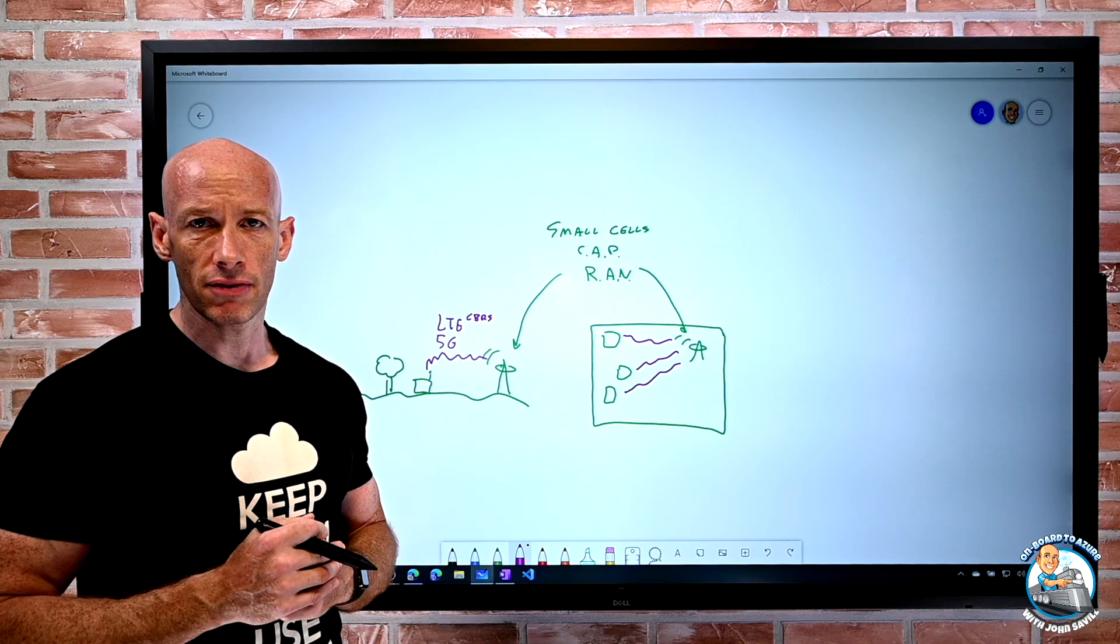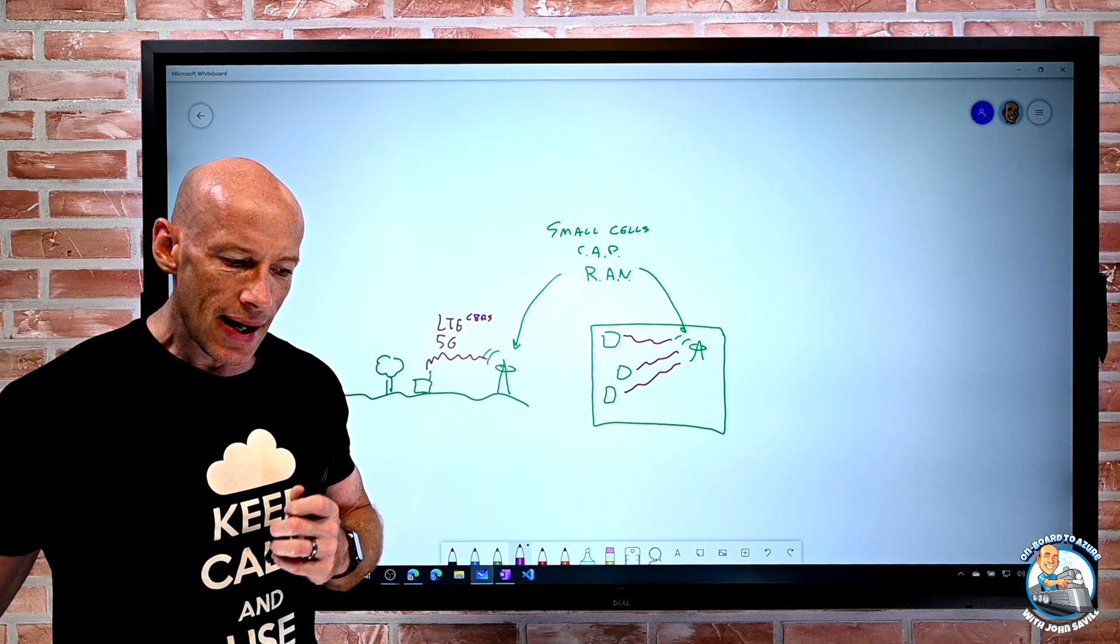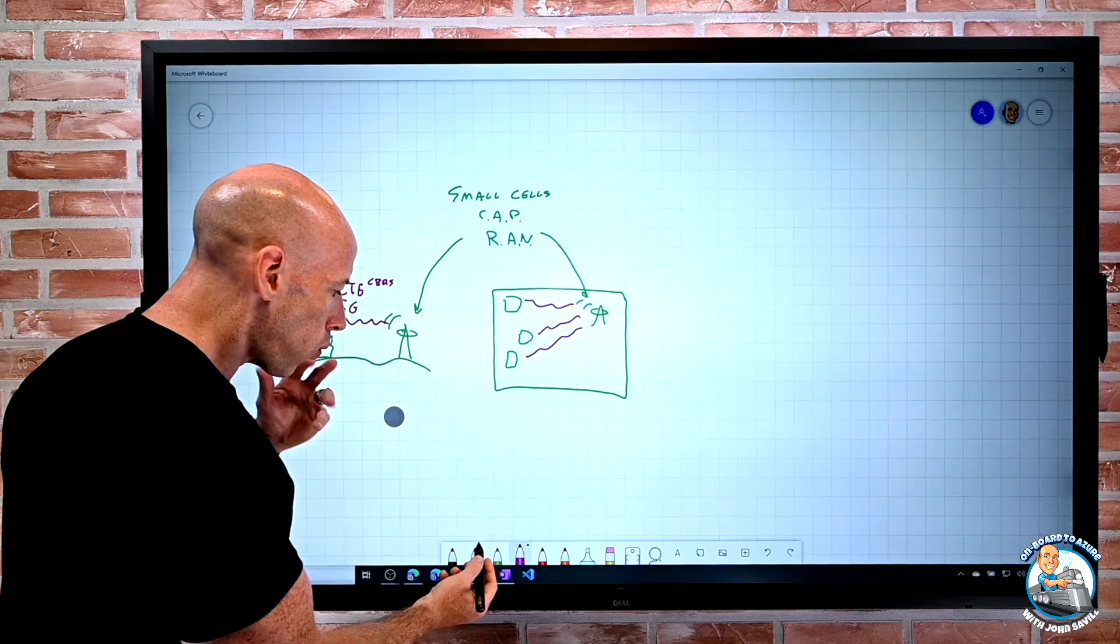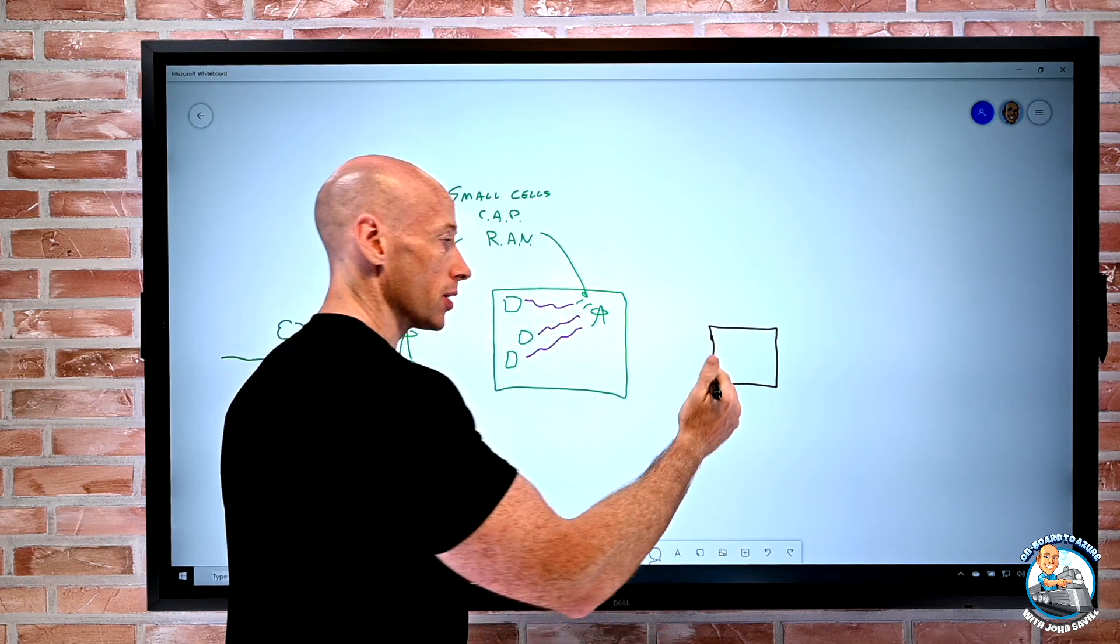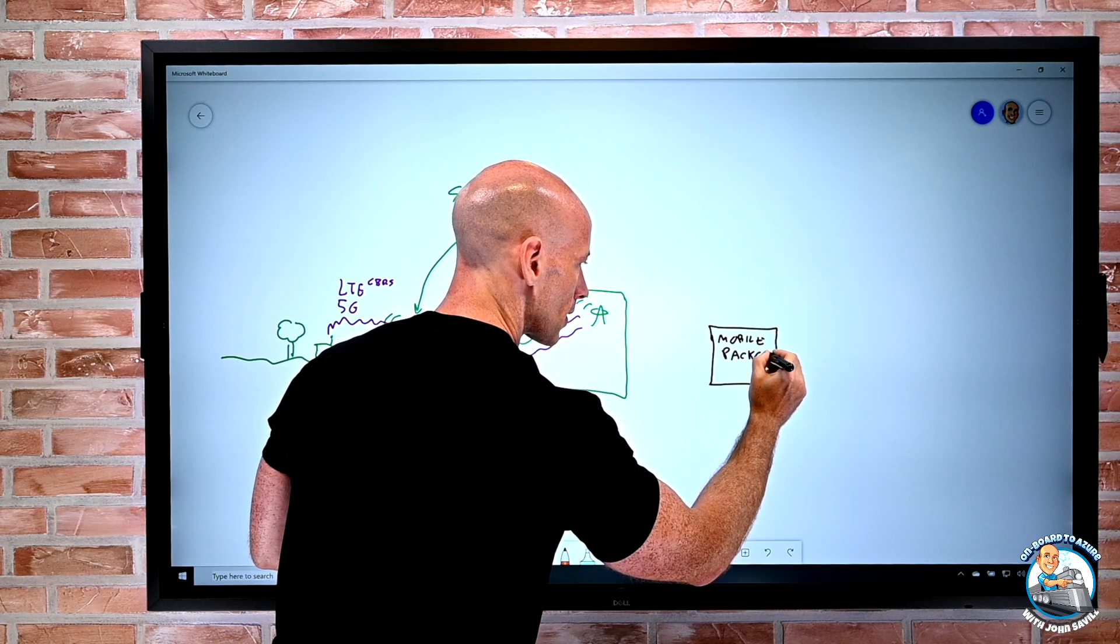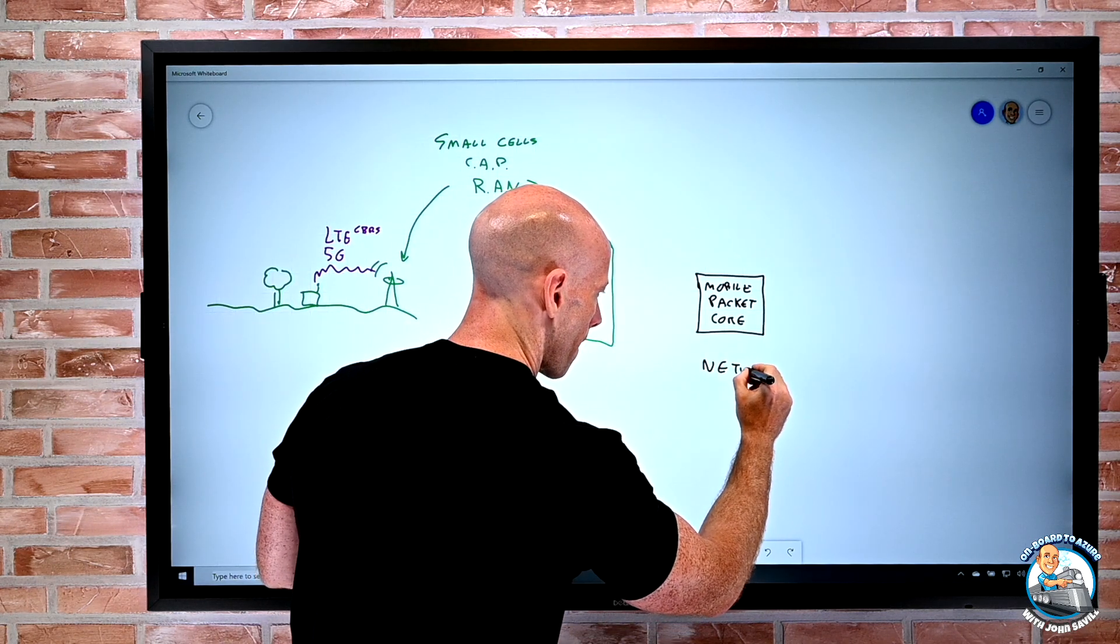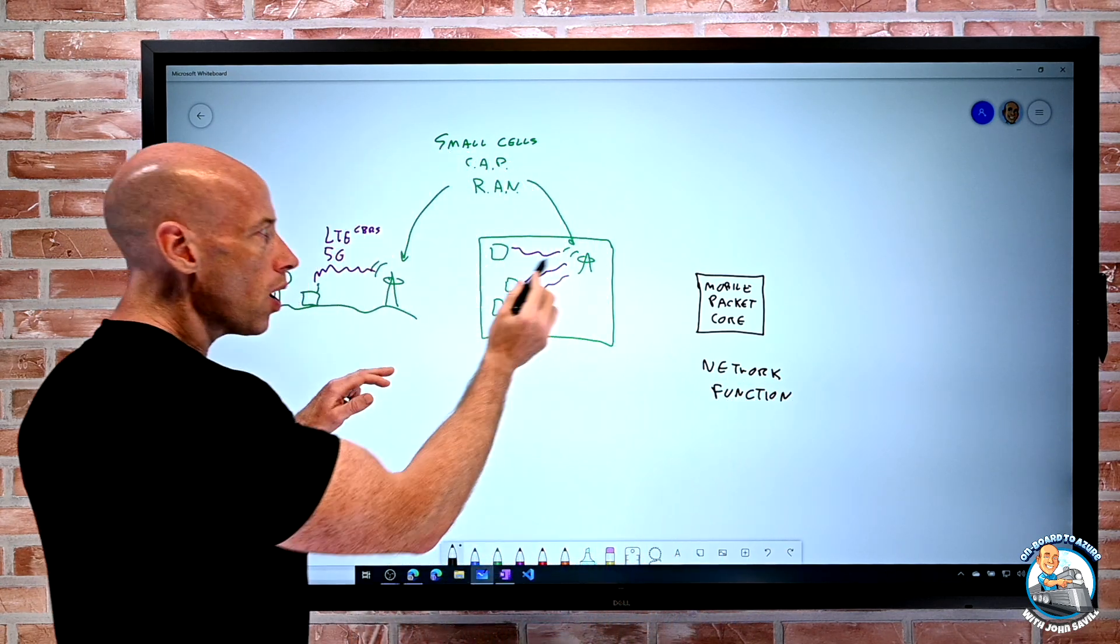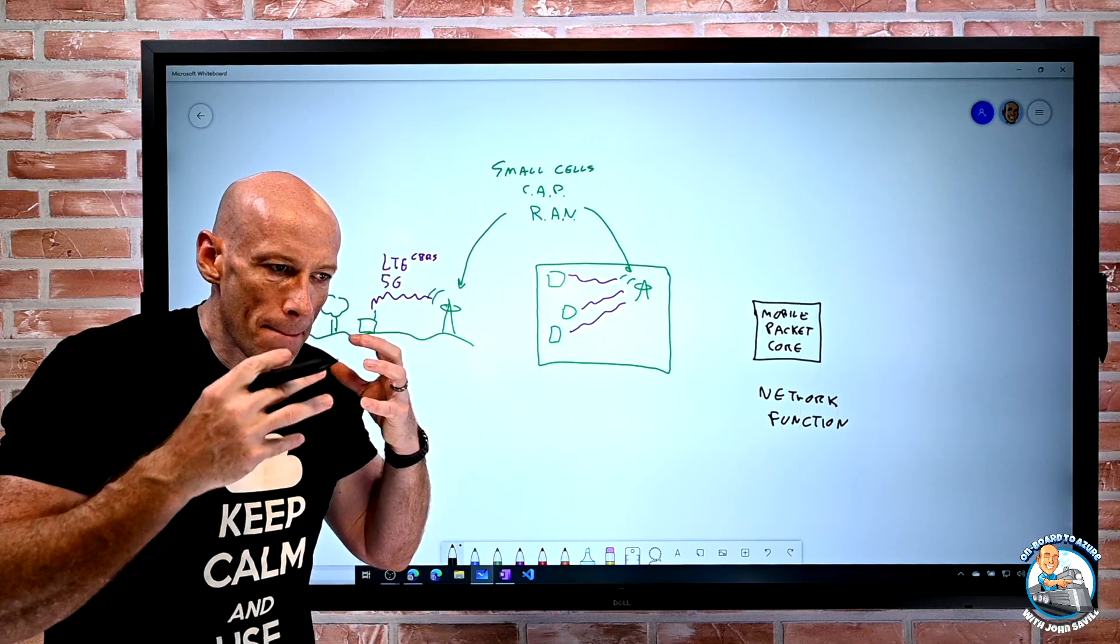If I'm talking about a private 5G, private LTE network, not all of those things are going to apply. In fact, for the bulk of this, what we actually need is this mobile packet core. So what I require is this network function and I have to run this mobile packet core. And this is going to work with these small cells to actually get the data and actually make it do something.